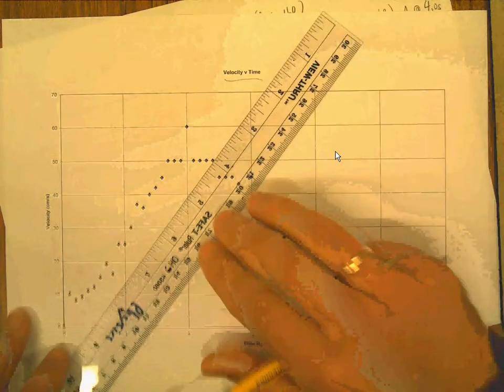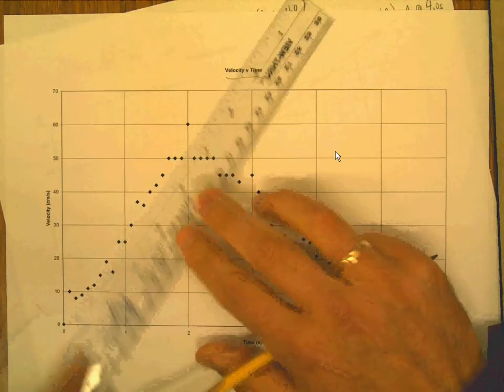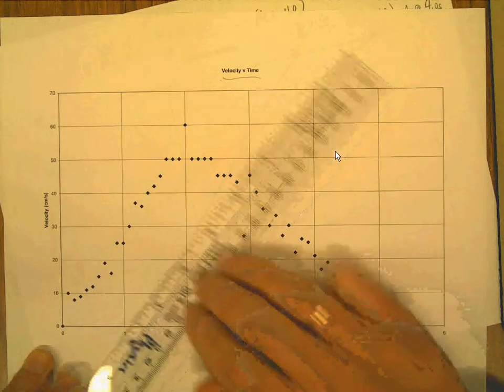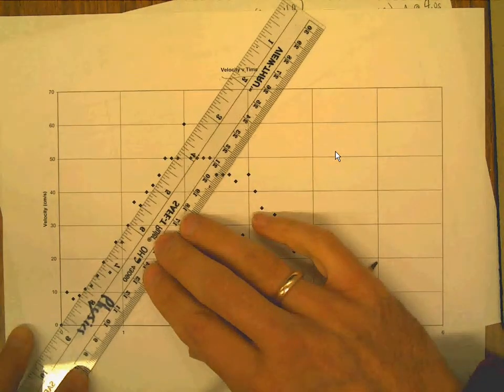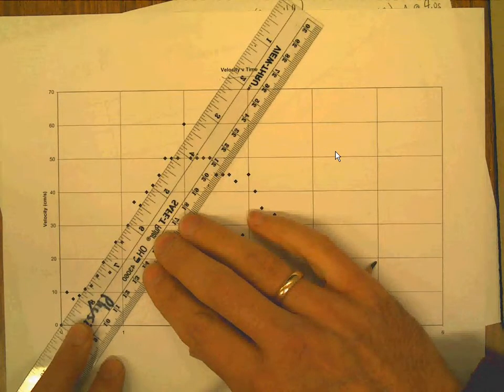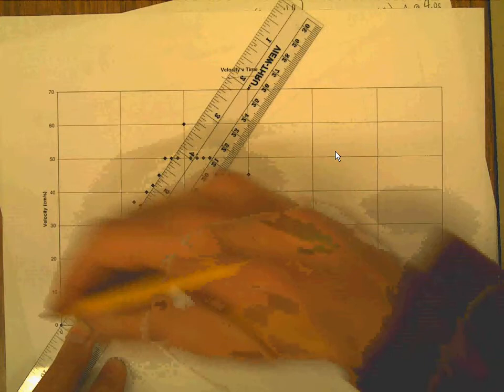I've also got vertical grid lines which is going to help us a little bit here. But what we want to do is stick a best fit line because this is sort of an acceleration, this is a deceleration like that. And a best fit line just kind of goes through the points like this.